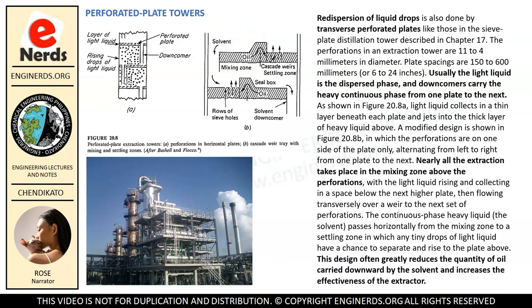Let us now talk about the perforated plate towers. Redispersion of liquid drops is also done by transverse perforated plates like those in the sieve plate distillation tower described in Chapter 17. The perforations in an extraction tower are 1 to 4 mm in diameter. Plate spacings are 150 to 600 mm, or 6 to 24 inches. Usually the light liquid is the dispersed phase, and downcomers carry the heavy continuous phase from one plate to the next. As shown in Figure 20.8a, light liquid collects in a thin layer beneath each plate and jets into the thick layer of heavy liquid above. A modified design shown in Figure 20.8b has perforations on one side of the plate only, alternating from left to right from one plate to the next.